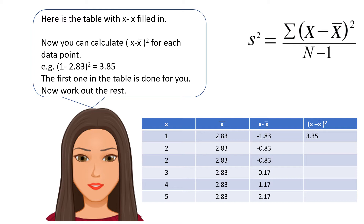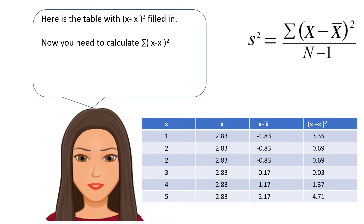If you look at the variance equation, it has X minus X-bar squared, so we need to do that next. The first one is already done: X minus X-bar squared for the first piece of data is 3.35, because it's (1 minus 2.83) squared equals 3.35. Pause here to work out the rest. Here is the table with X minus X-bar squared filled in.